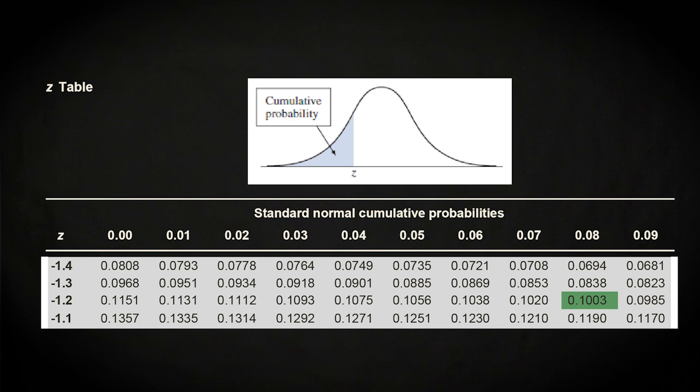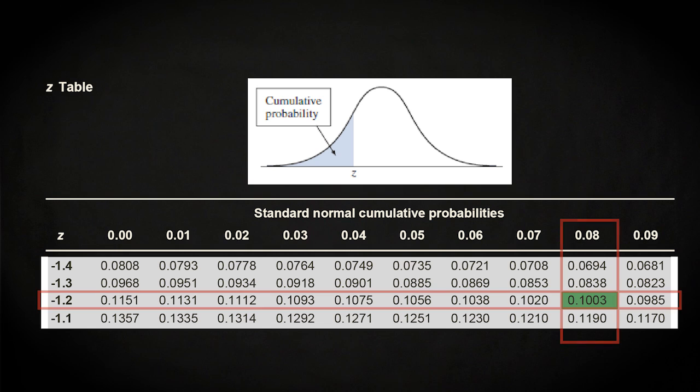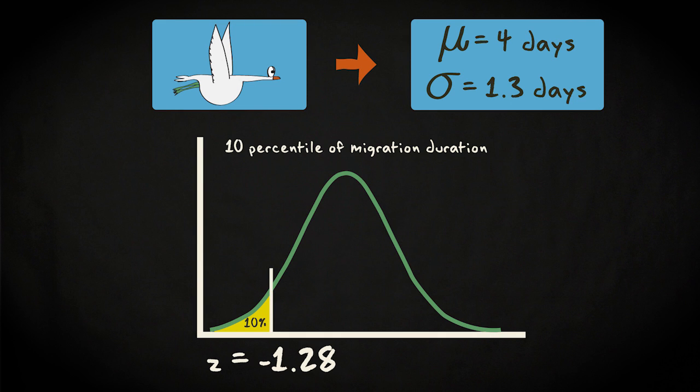First, you'd look up the probability value of 0.1, or the value closest to that. Next, you read up the corresponding Z-value. In this case, it is minus 1.28.